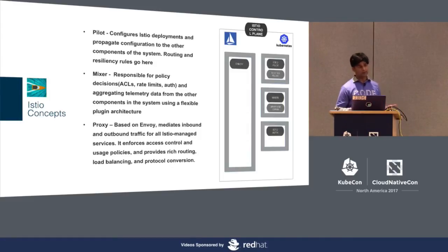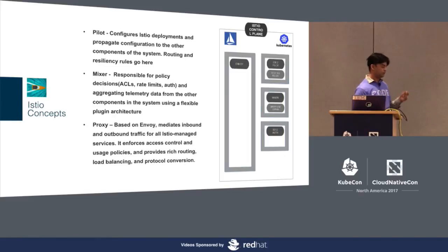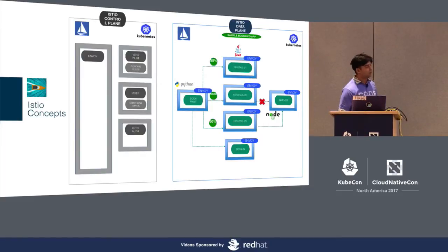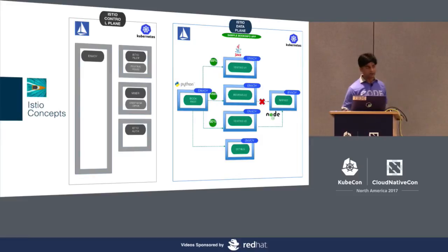Finally, the proxy — which is essentially the sidecar and the heart of the service mesh architecture — is based on Envoy. It mediates all inbound and outgoing traffic and is responsible for enforcing all policy decisions, routing decisions, and load balancing decisions. When your application gets deployed, you have the Istio control plane with all these components and then your Istio data plane hosting your application.